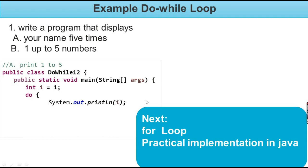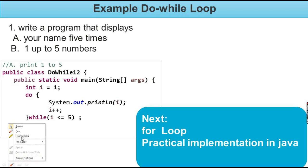We can see i is equal to 1. Then i++ is the increment. The condition checks if i is greater than or equal to 5. The loop continues executing the same statement until the condition is met.